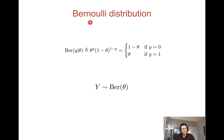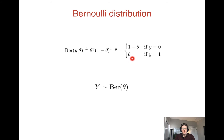A Bernoulli distribution is a distribution that applies to a variable with two options, a binary variable. So y can be either zero or one. A Bernoulli distribution has one parameter theta, which is some probability between zero and one. The probability that y equals one given theta is theta. And conversely, the probability that y equals zero is one minus theta. So a Bernoulli distribution is the distribution of a coin flip for a weighted coin with some probability theta.